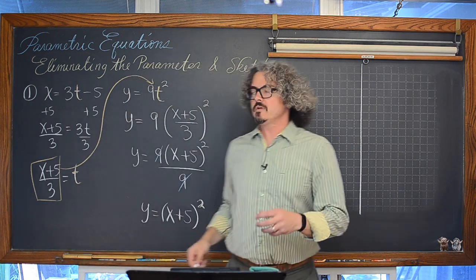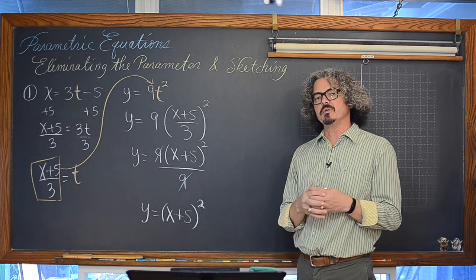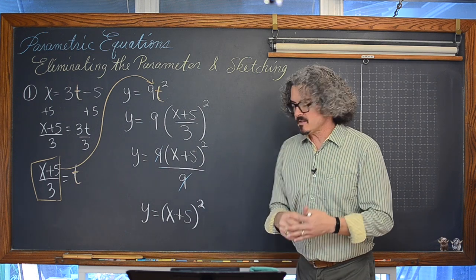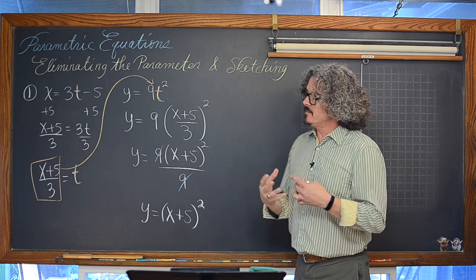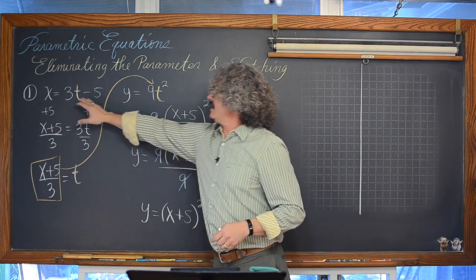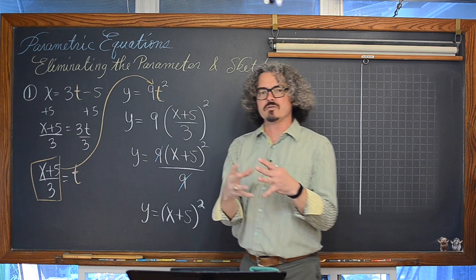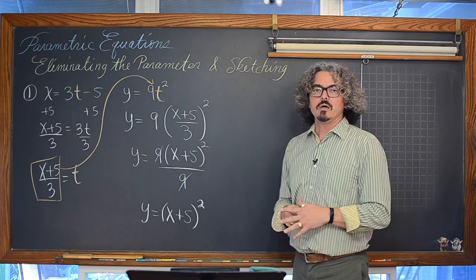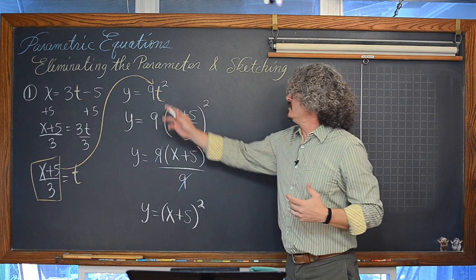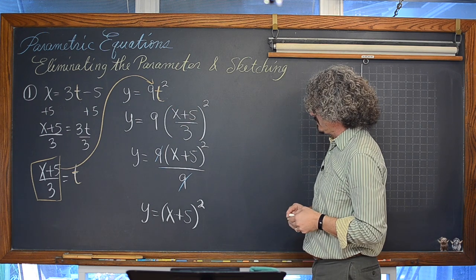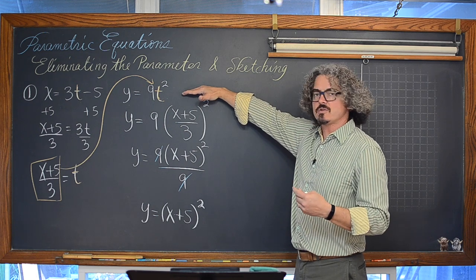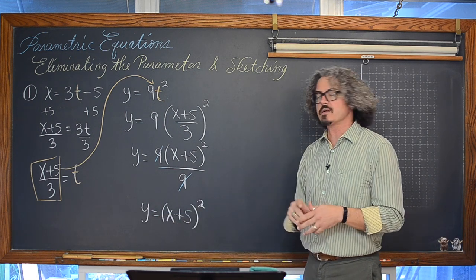Sometimes when given a system of parametric equations you can predict what the final graph looks like. We have y with a square term, so maybe you'd expect a parabola — and indeed it came out to be a parabola. That's largely because the expression for x is a linear function. If x were quadratic or a sine function, who knows what the graph would look like. Don't always think you can just glance at the y equation and know the final graph.